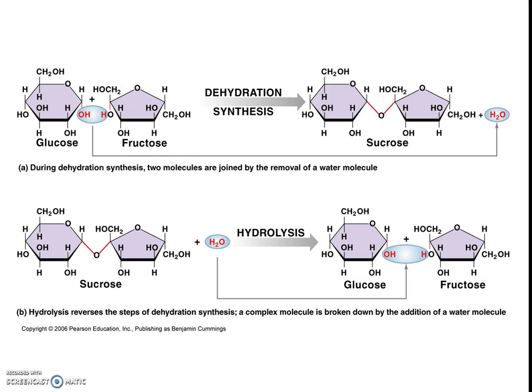If you look on the right-hand side of the glucose molecule, notice the hydroxide group (OH) is in red. On the left side of the fructose molecule, we combine that hydroxide with the hydrogen that is on the fructose. When we combine those and remove water, we open up the bonding. Now the carbon from each one can bond to the oxygen still left on the fructose, and we come up with our disaccharide called sucrose. This is dehydration synthesis — we remove water to join the molecules.